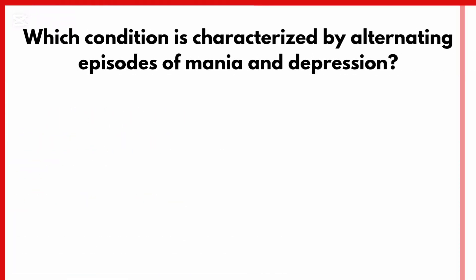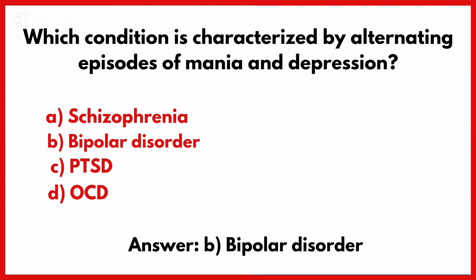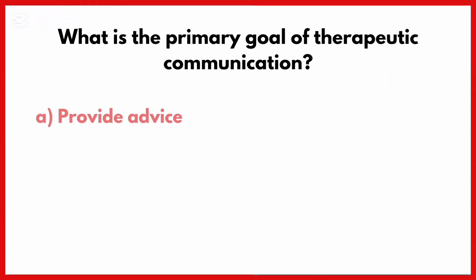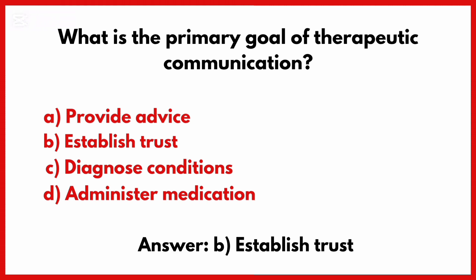Which condition is characterized by alternating episodes of mania and depression? Correct answer is option B: Bipolar disorder.